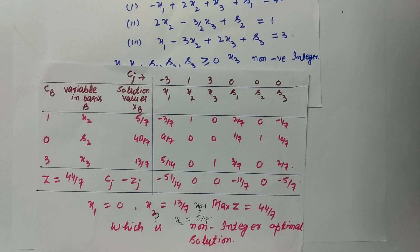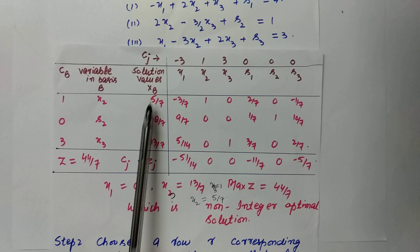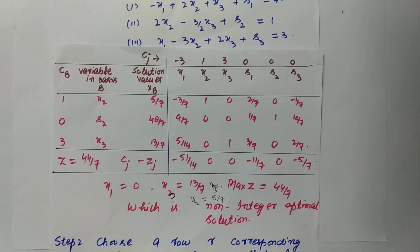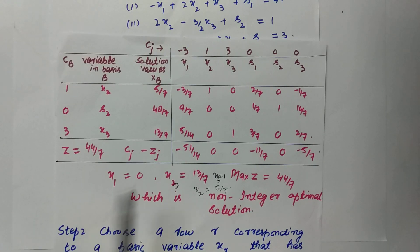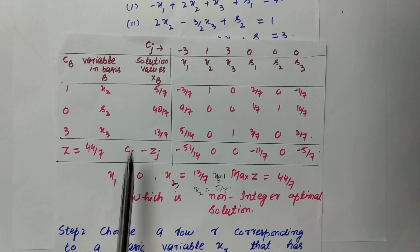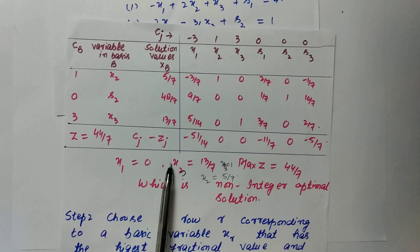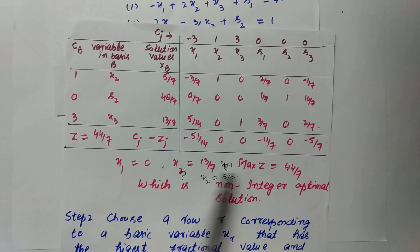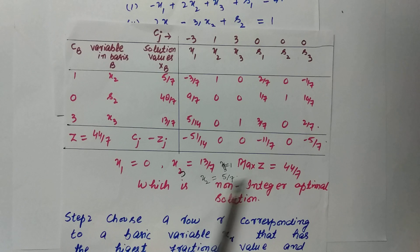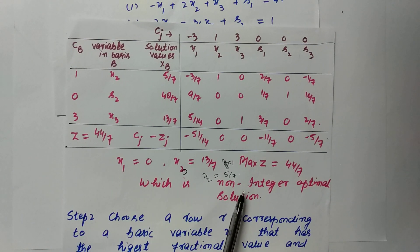I have directly written the feasible optimal solution obtained by the simplex method. If you want to watch the simplex method in detail, I have provided a link in the description. Here x1 = 0 (not in basic variables), x3 = 13/7, x2 = 5/7, and the maximum z = 44/7, which is the required non-integer optimal solution.